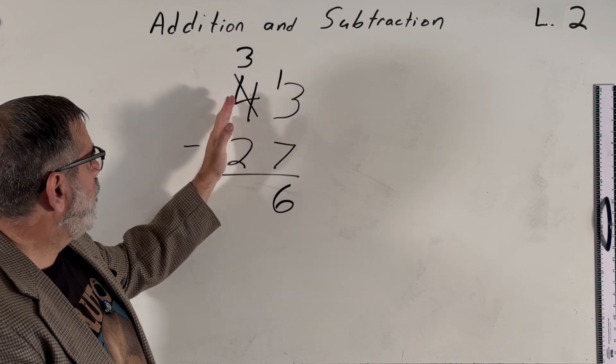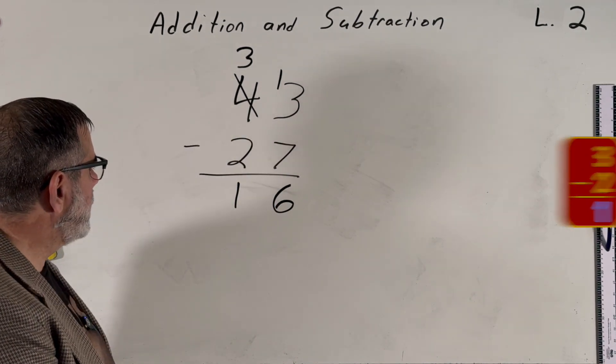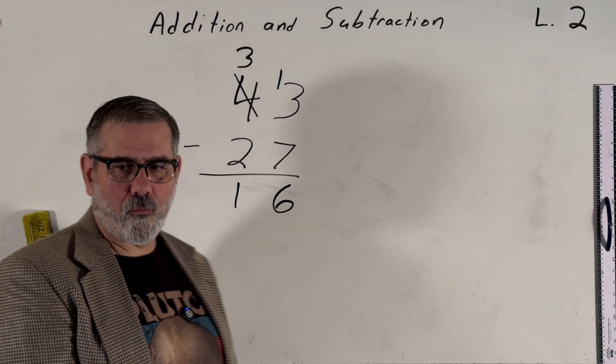Then, like before, we move over to the next column. Now we have 3 minus 2. Well, that one is easy. That's just 1. And our answer 16 is here in the answer section for 43 minus 27.